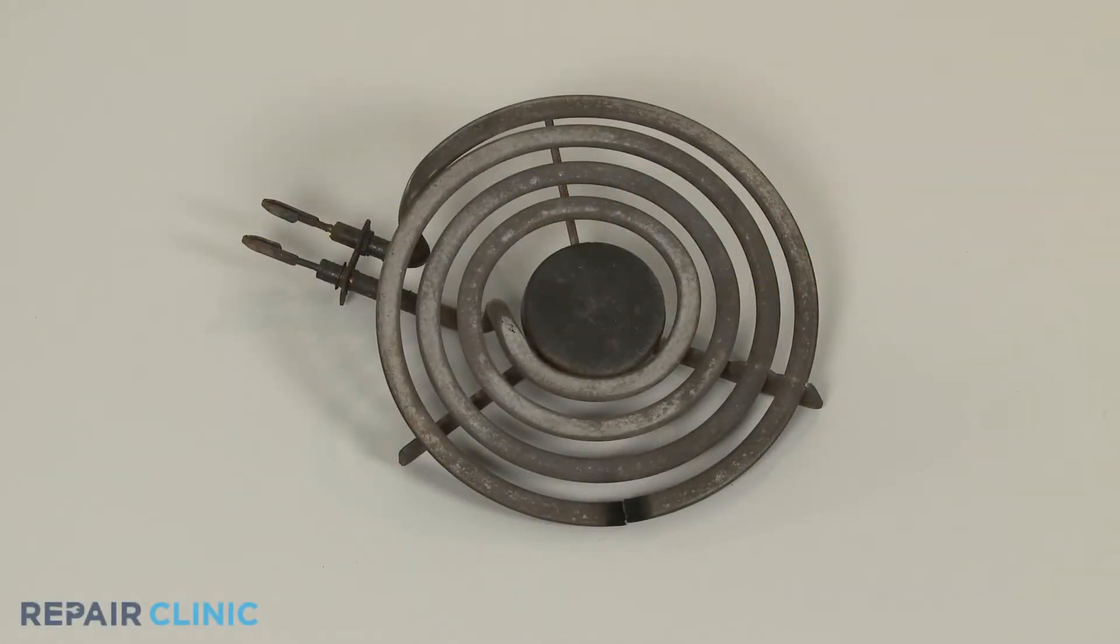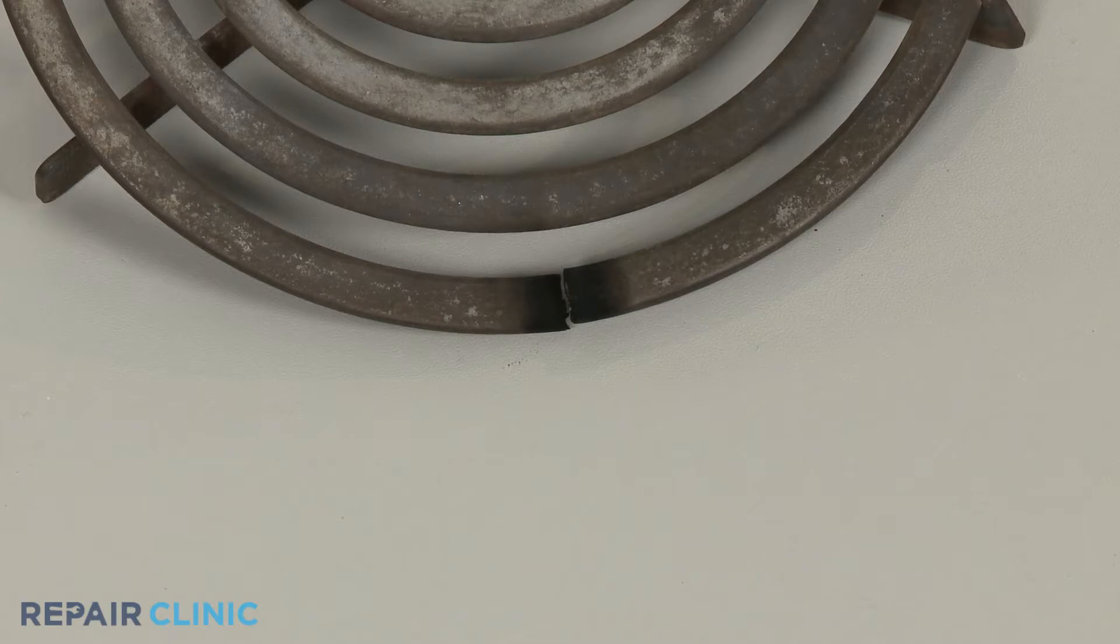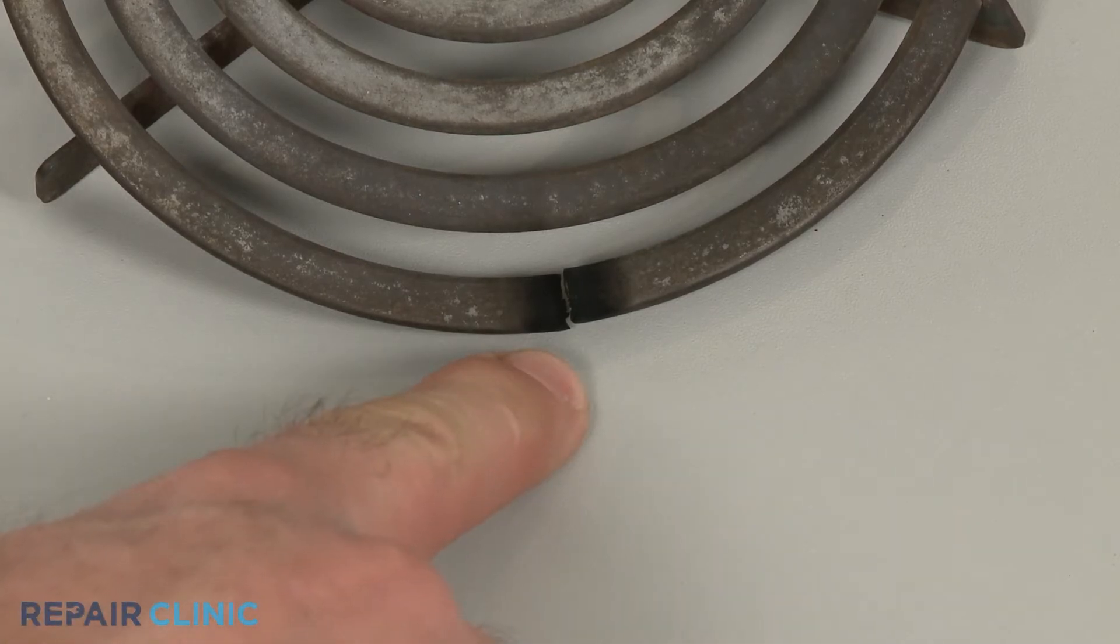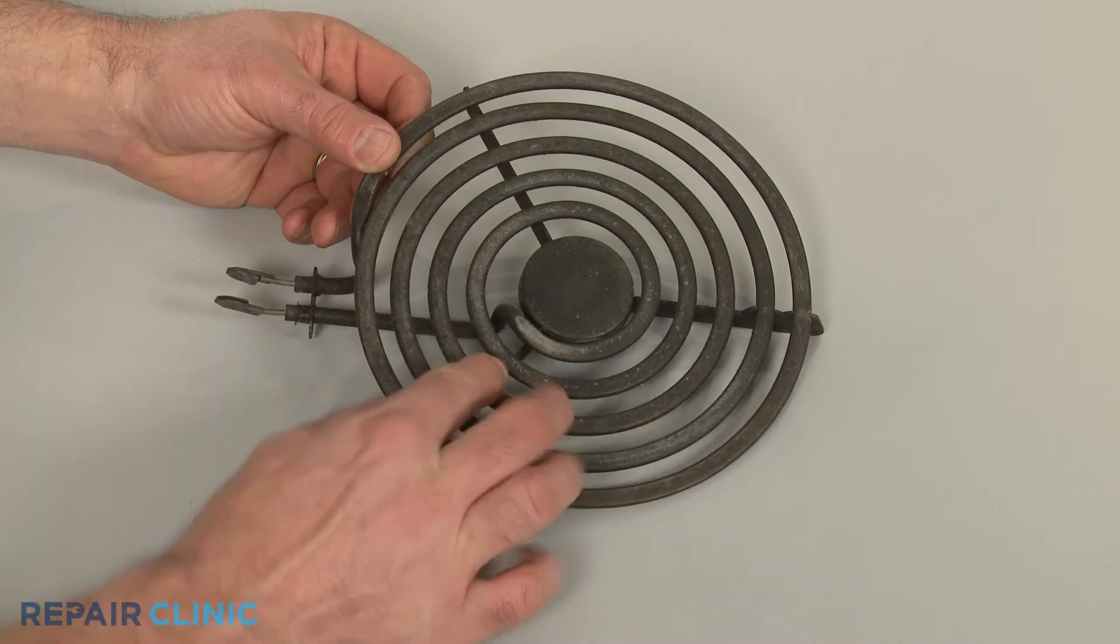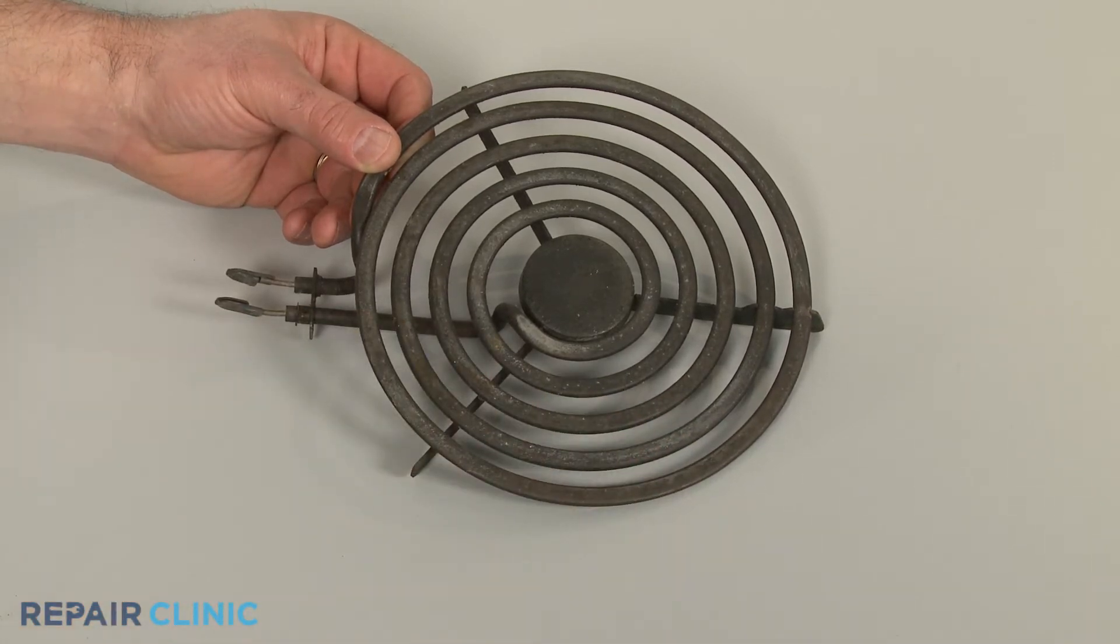You can often determine that a surface coil element is burned out by simply checking to see if the element is visibly broken or blistering. But since you can't always tell by looking, it's best to perform a continuity test.